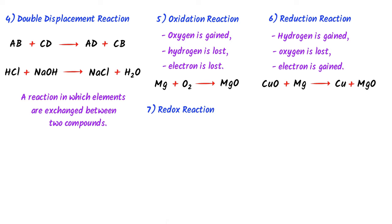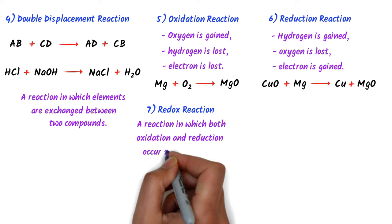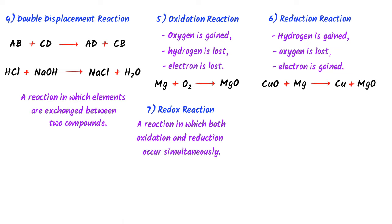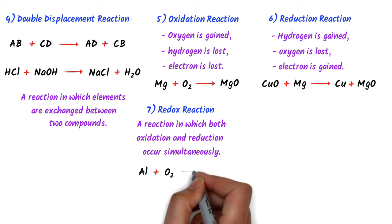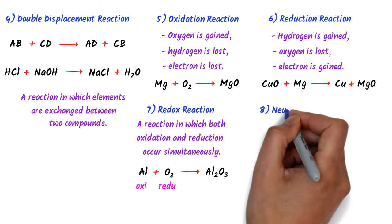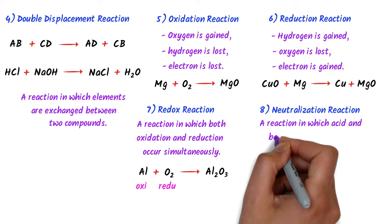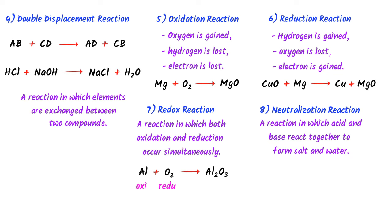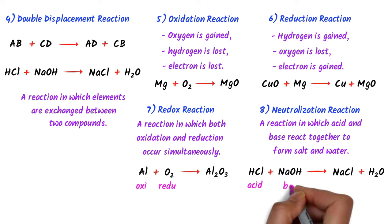The seventh type is redox reaction — a reaction in which both oxidation and reduction occur simultaneously. For example, aluminium plus oxygen gas react to form aluminium oxide — aluminium is oxidized and oxygen is reduced. The eighth type is neutralization reaction — a reaction in which acid and base react to form salt plus water. For example, HCl plus sodium hydroxide react to form sodium chloride plus water — HCl is the acid, sodium hydroxide is the base, and sodium chloride is the salt.